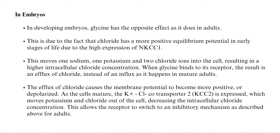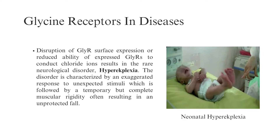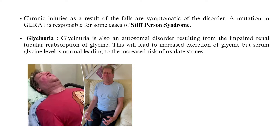Glycine Receptors in Diseases: Disruption of glycine receptor surface expression or reduced ability to conduct chloride ions results in the rare neurological disorder hyperekplexia. The disorder is characterized by an exaggerated response to unexpected stimuli followed by temporary but complete muscular rigidity, often resulting in an unprotected fall. Chronic injuries from falls are symptomatic of the disorder. A mutation in glycine receptor alpha-1 is responsible for some cases of stiff person syndrome.